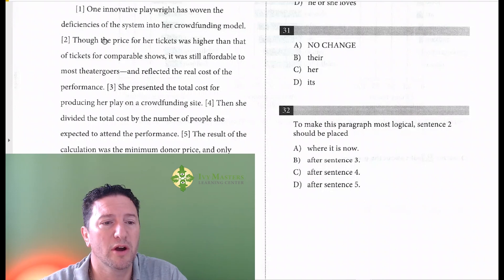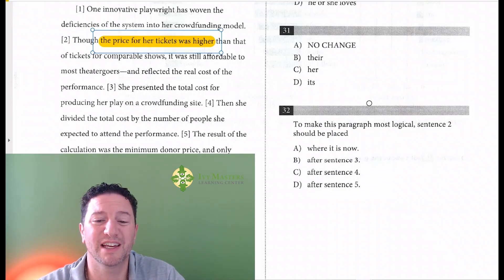Notice it says price for her tickets was higher. She has to have the price of her tickets set already. So let's go through the answer choices, let's see after sentence 3.